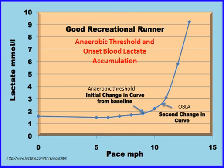The two terms to remember are anaerobic threshold and onset of blood lactic accumulation, or OBLA. As you can see on the graph, anaerobic threshold is the point at which lactic acid begins to increase slowly. If the athlete continued at this pace, they would gradually increase lactic acid in the working muscles, which would eventually cause them to slow down. Before this point, at about 6–7 miles per hour, the athlete can maintain pace without accumulating lactic acid, as the body is able to remove it as it is produced and can therefore continue much longer before fatigue sets in.